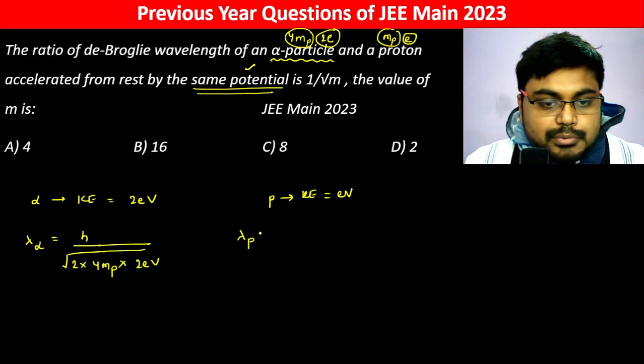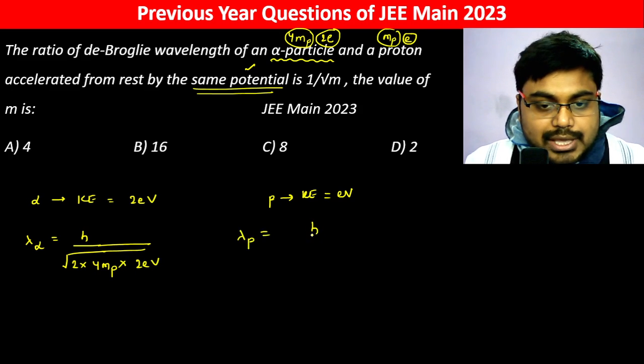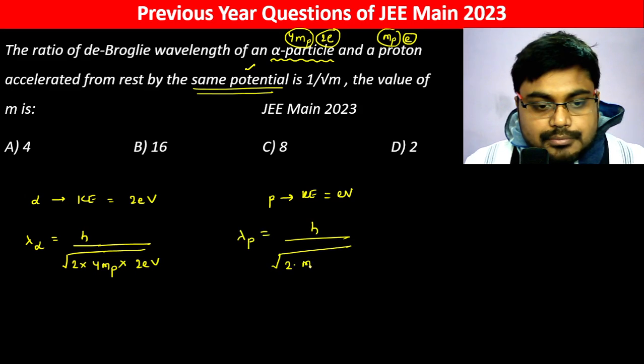Lambda of proton is equal to h divided by under root of 2 into mass of proton into its kinetic energy which is eV.